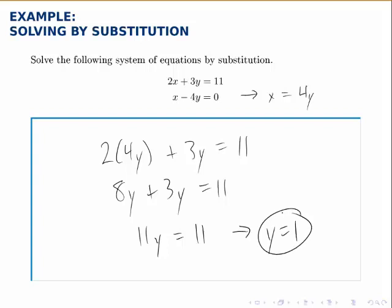We're still not done, that's only half the answer. We're looking for a combination of x and y. But we know, remember that x, whatever it is, equals 4 times y. So if y is 1, x must be 4 times that or 4.